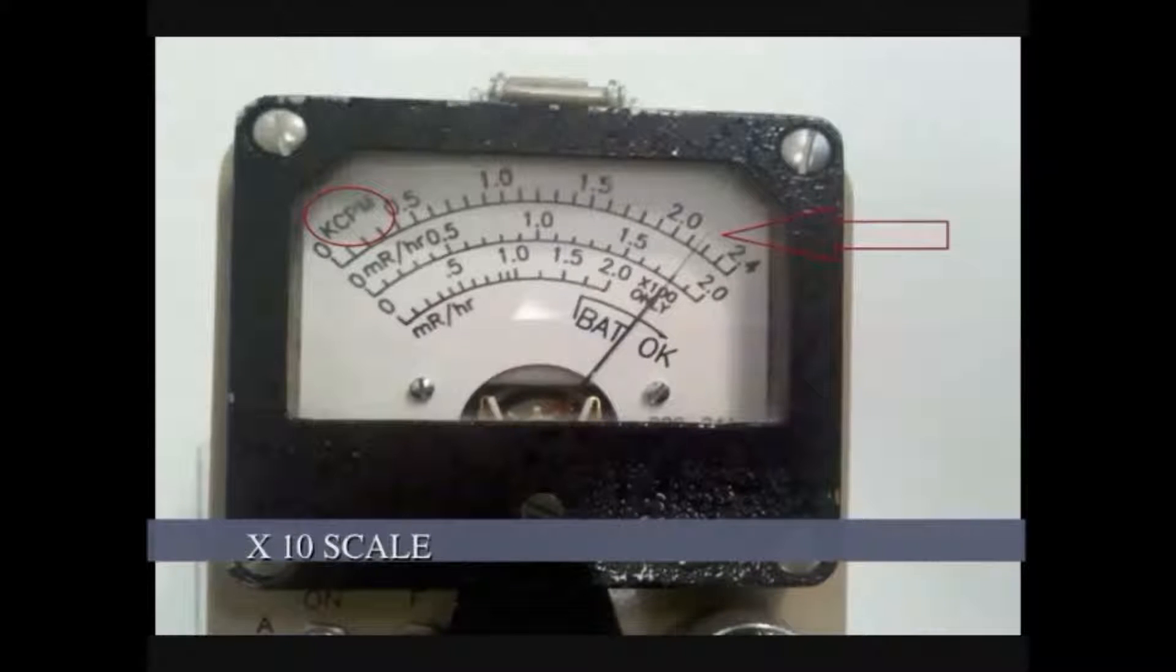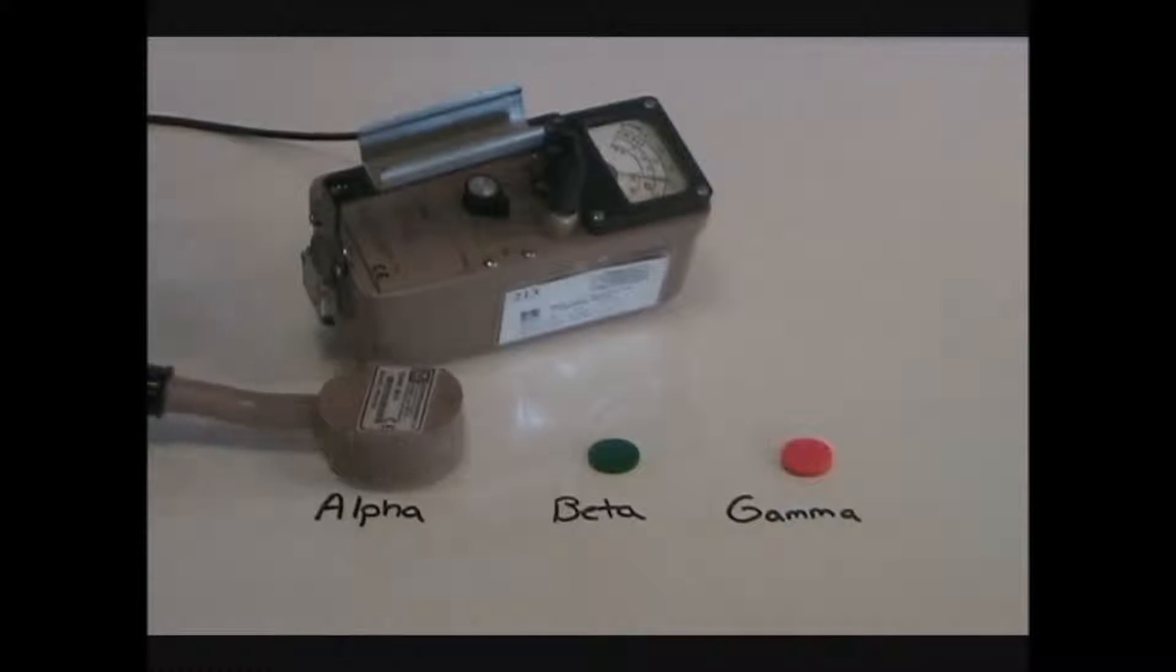The alpha response is 22k or 22,000 counts per minute.